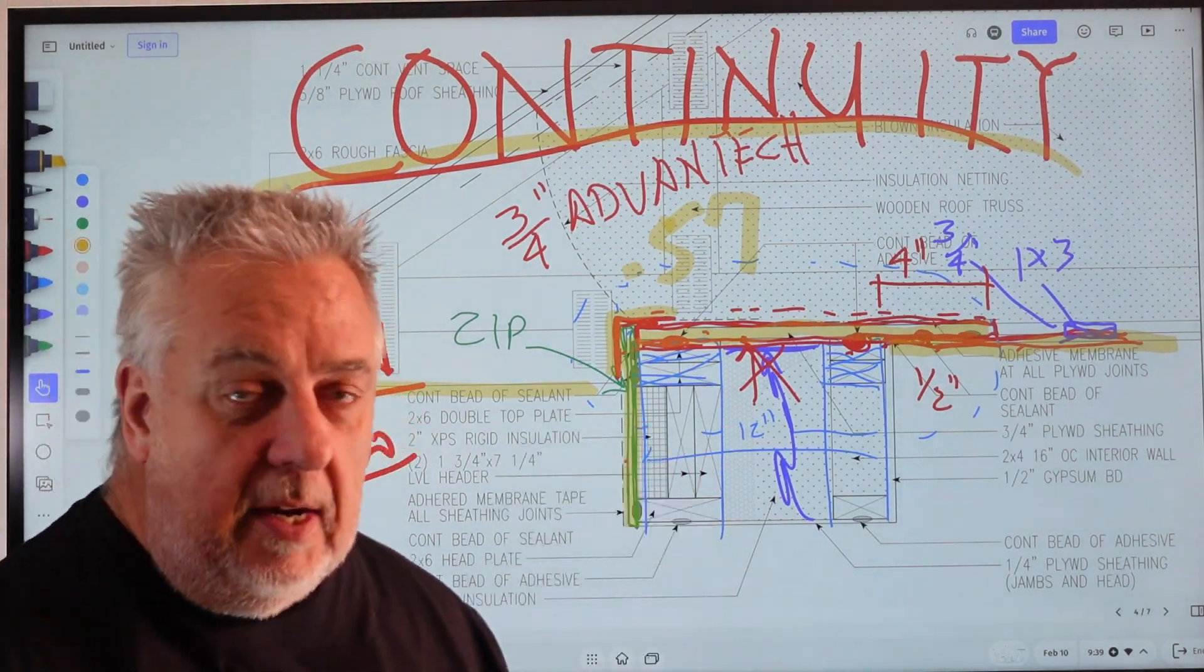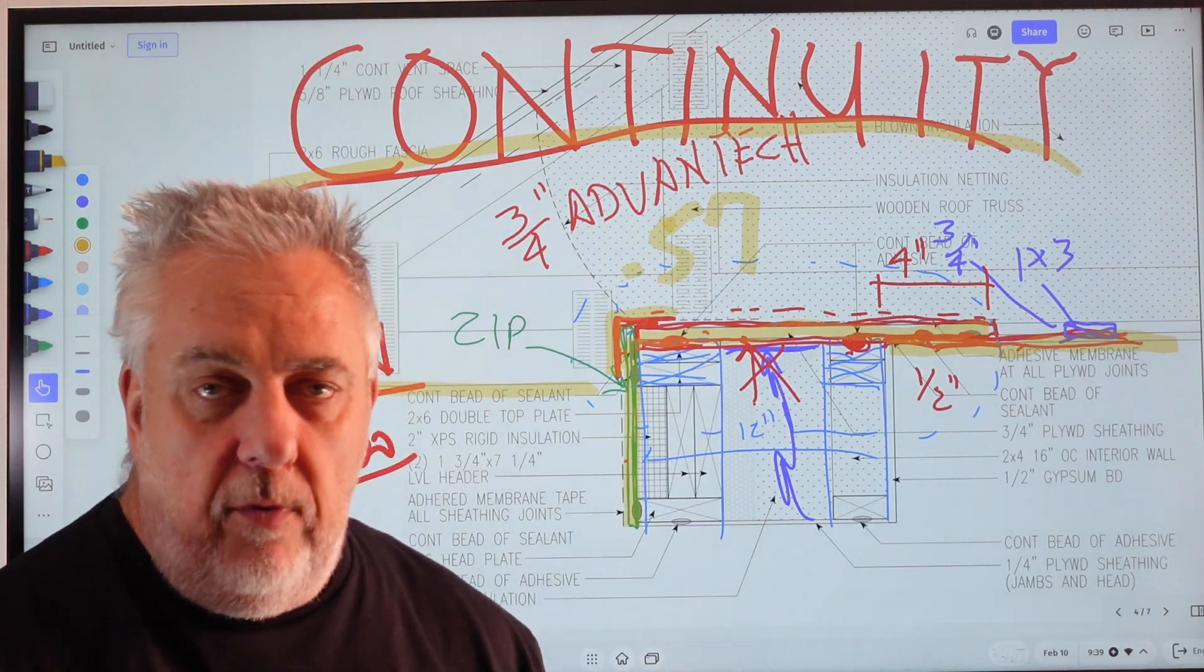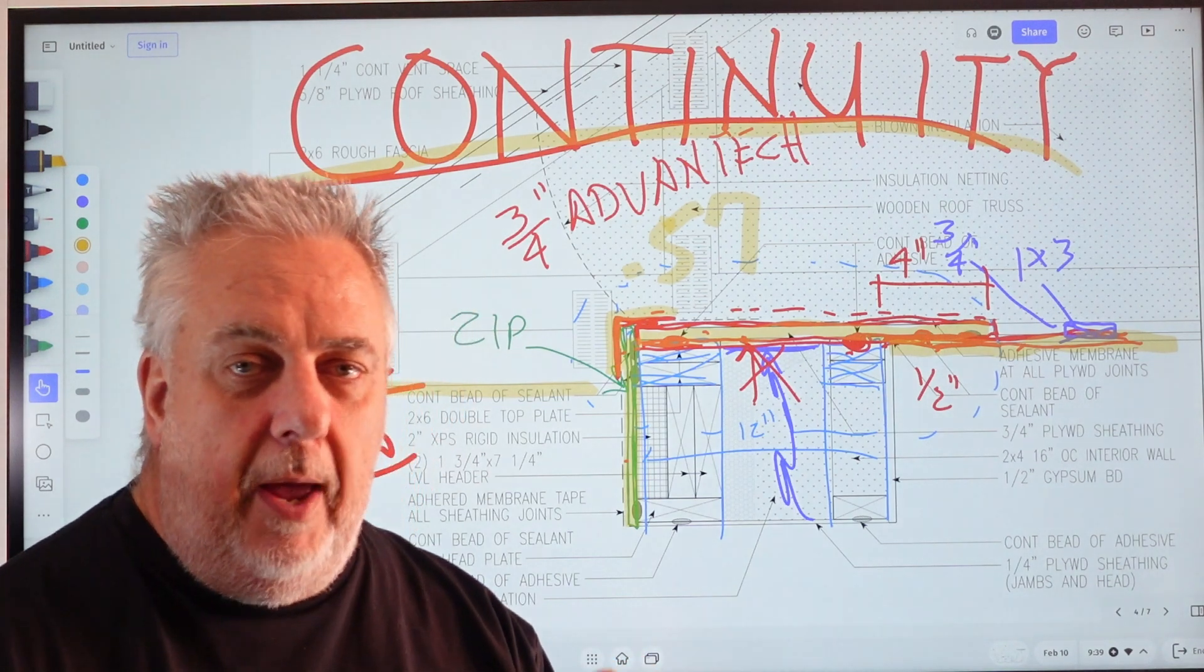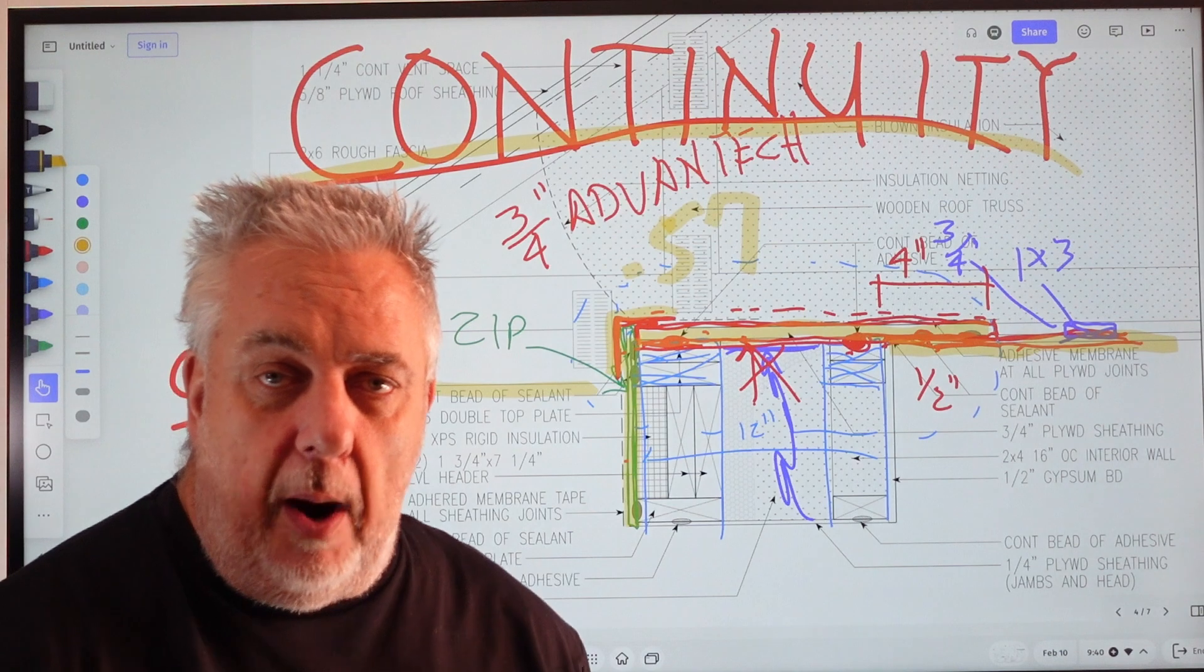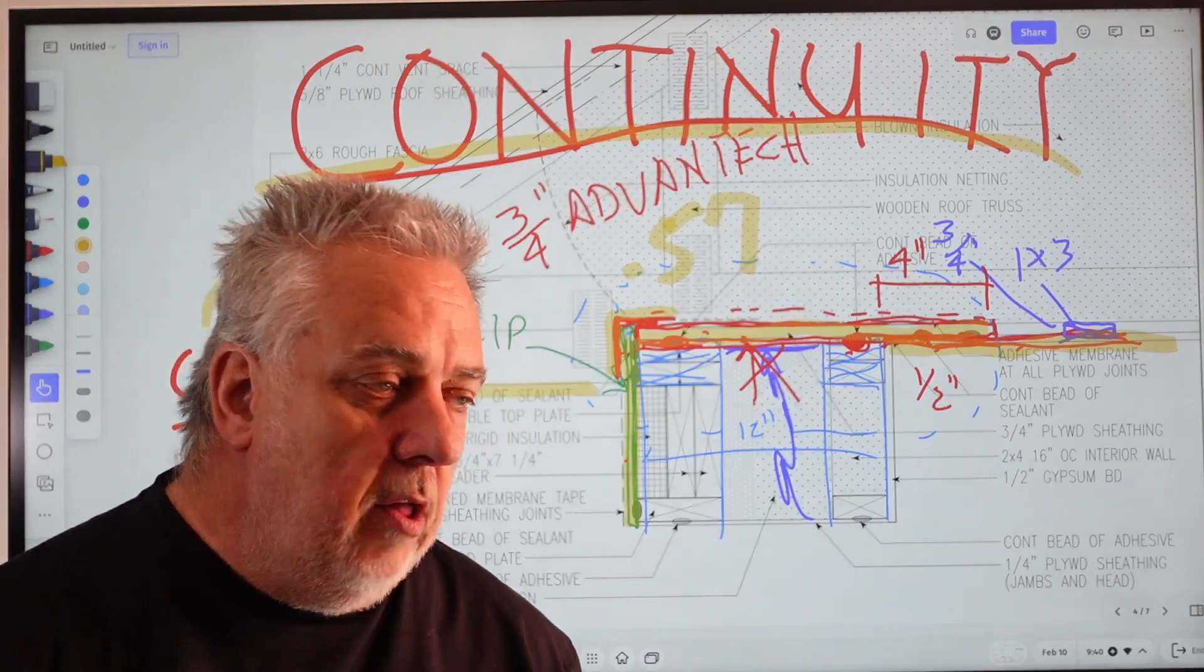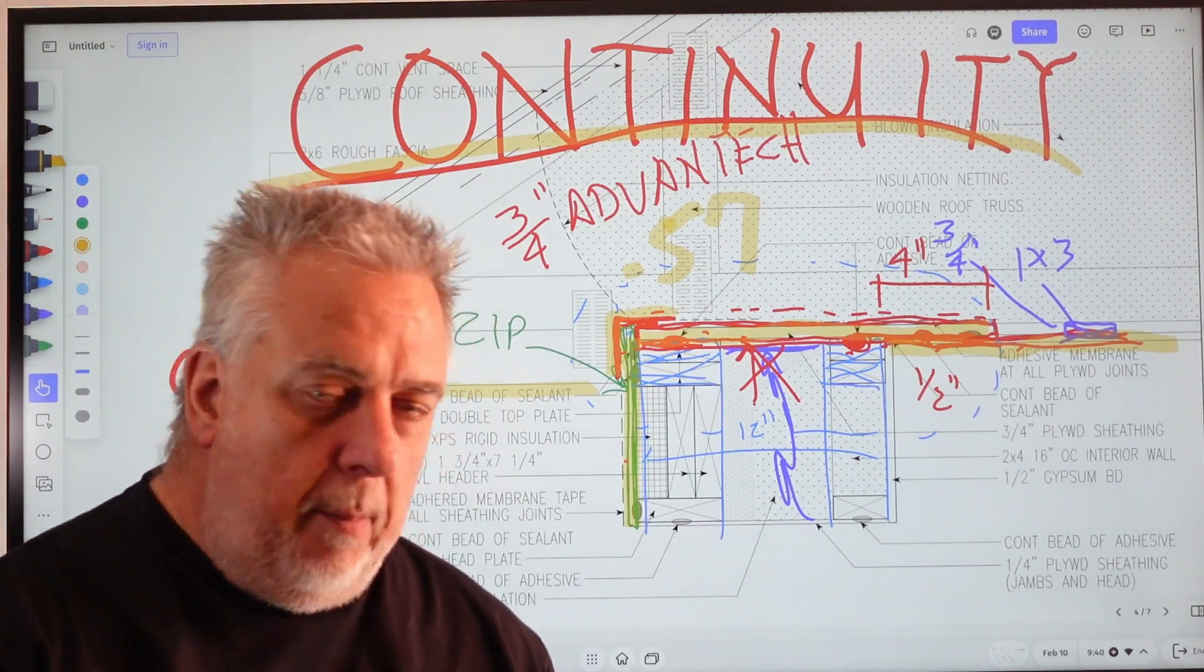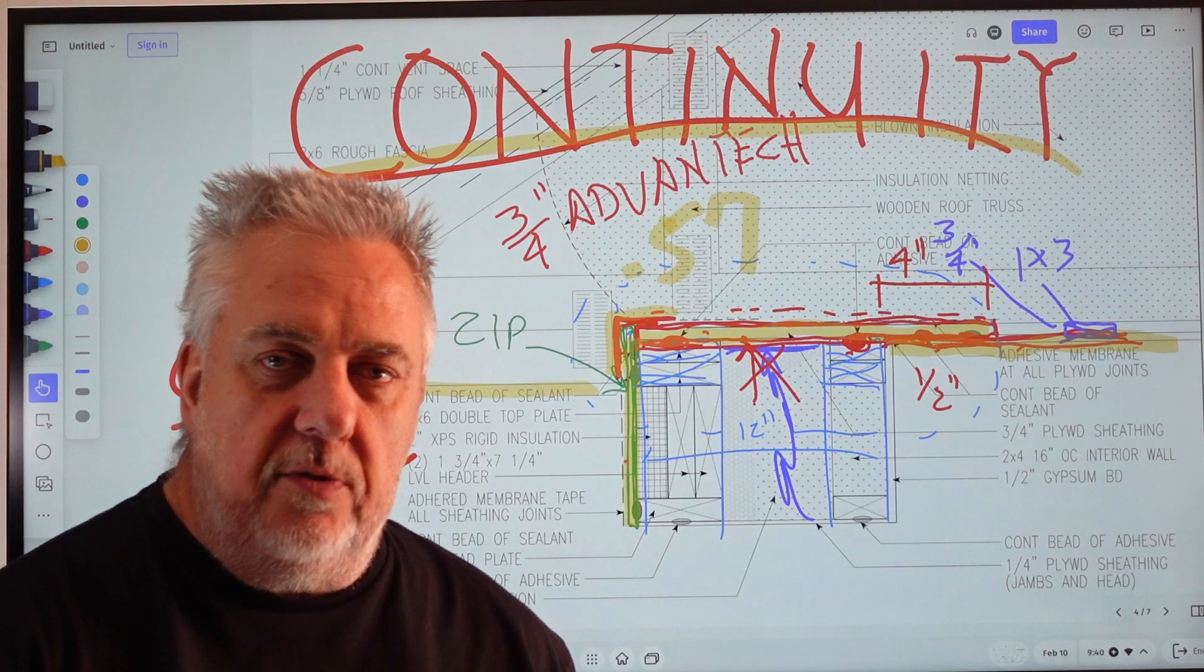Because this is an eave detail designed and drawn just for the framers. For the framers to install the frame and maintain continuity and get a proper air barrier. All the other stuff - crown molding, soffits, metal roof, drip edge - none of that has to do with the air barrier. So I don't want to muddy the waters for the framer. So I do what I call a set of twins.